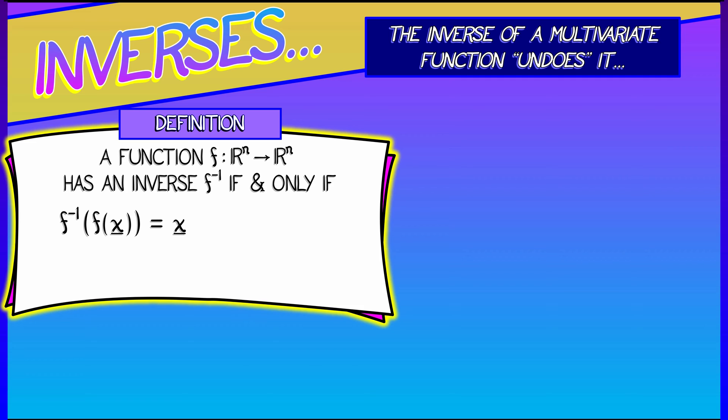So f inverse of f of x equals x for all x, and f of f inverse of u equals u for all u. It doesn't matter which way you do that composition. You have to get the identity function back for all possible inputs.